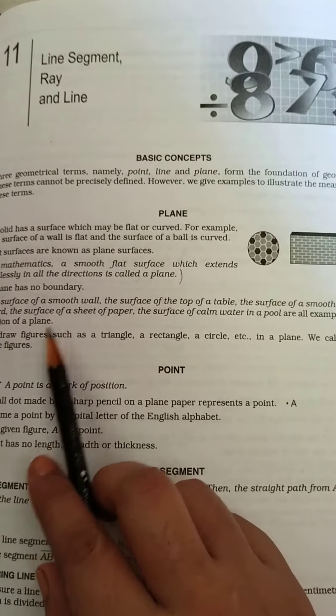Now, what is point? A point is a mark of position. Suppose I put a dot here, this dot will be called a point.